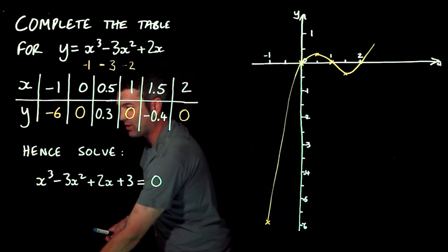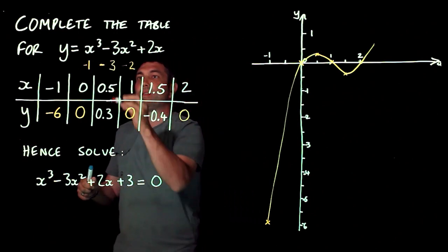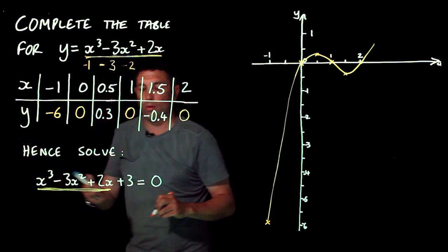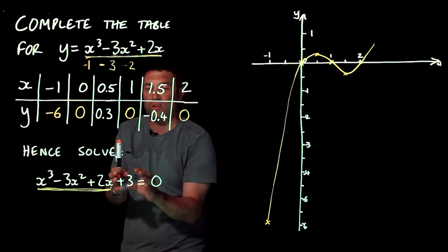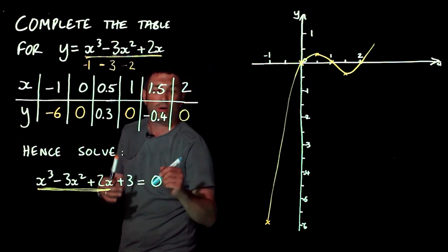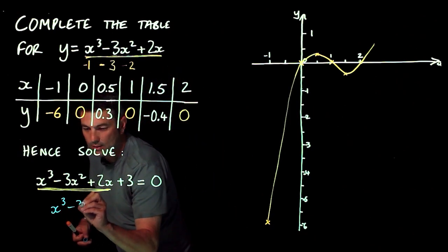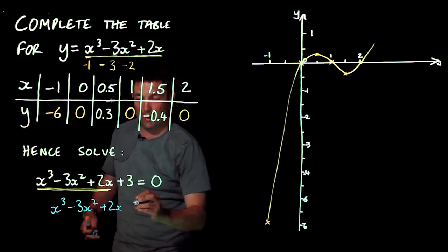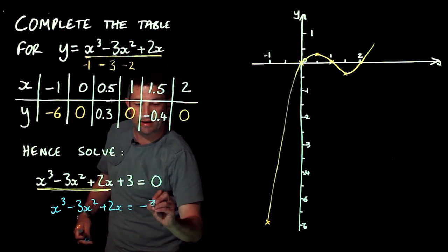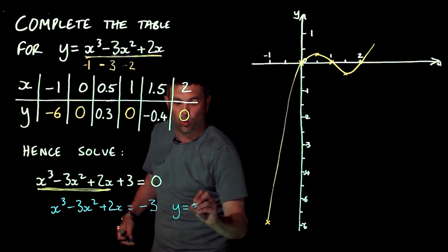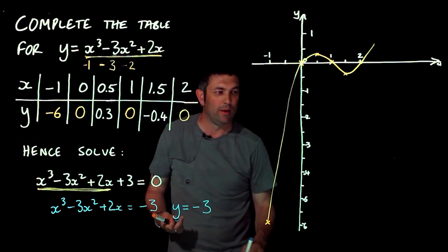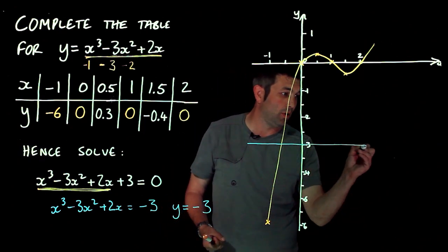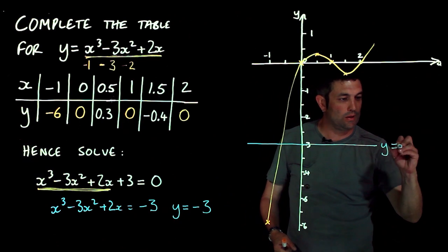Now I'm asked to hence solve this. What you might notice actually is that this bit appears right at the beginning. Now I've just got a bit tacked on the end. I'm going to actually rearrange that and put that on the other side so I can draw another graph. Because I've already got that graph drawn in orange here, and when I take that over to the other side, I get negative three. So I'm actually going to draw the line y equals minus three. Now we should know that that is a horizontal line going through minus three on the y axis. So there's the y equals minus three line.